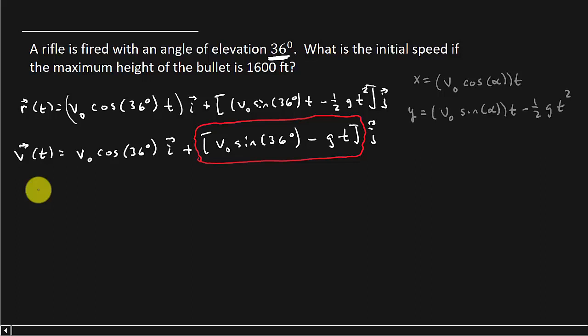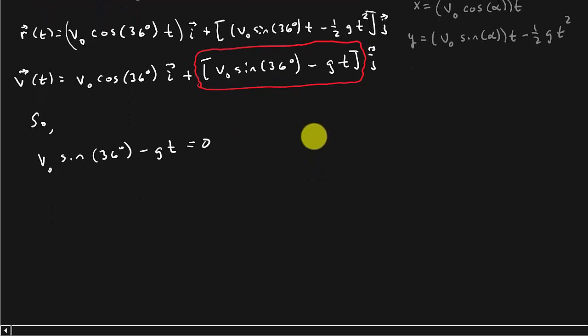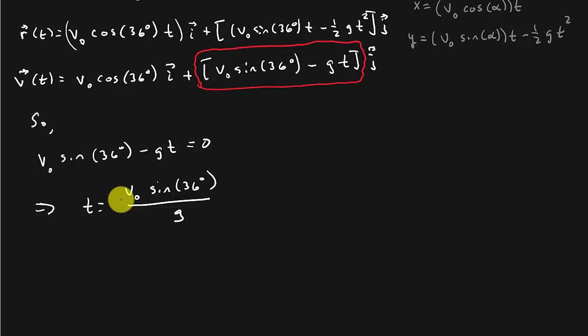So we're going to take V naught sine 36 degrees minus G T equals zero, and we're going to solve this for T. This is going to go over, so we get T equals V naught sine 36 degrees over G. When we divide by negative G, negative and negative gives us the positive. So this is the time that it reaches its maximum height.